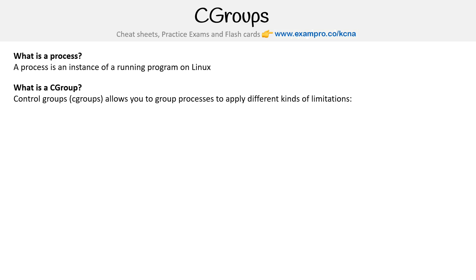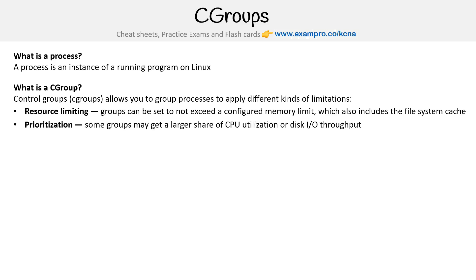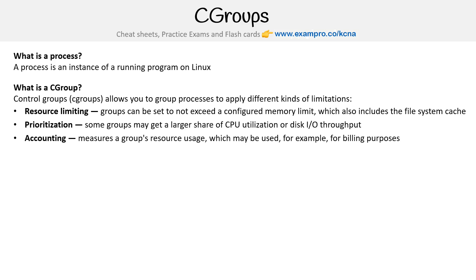Limitations could be things like resource limiting — groups can be set to not exceed a configured memory limit, which also includes file system cache prioritization. Some groups may get a larger share of CPU utilization or disk I/O throughput. Accounting measures a group's resource usage, which may be used for billing purposes. There is also control of freezing groups of processes, as well as checkpointing and restarting.